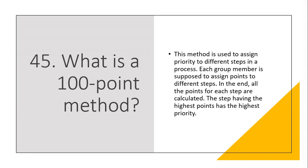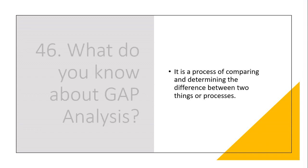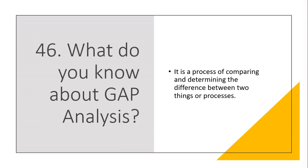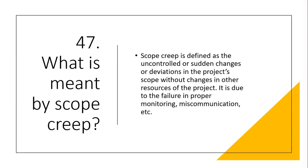Question 45: What is a 100-point method? This method is used to assign priority to different steps in a process. Each group member assigns points to different steps. In the end, all the points for each step are calculated, and the step having the highest points has the highest priority. Question 46: What do you know about gap analysis? It is a process of comparing and determining the difference between two things or processes. Question 47: What is meant by scope creep? Scope creep is defined as the uncontrolled or sudden changes or deviations in the project's scope without changes in other resources of the project. It is due to the failure in proper monitoring, miscommunication, etc.